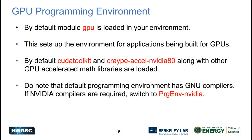Moving on to the programming environment: when you log into Perlmutter, everything is by default set for GPU nodes, so you won't need to make any changes. You can verify this by listing the loaded modules — you'll see that a GPU module is loaded. This module ensures all required environment variables and compiler wrappers are set up for GPU builds.